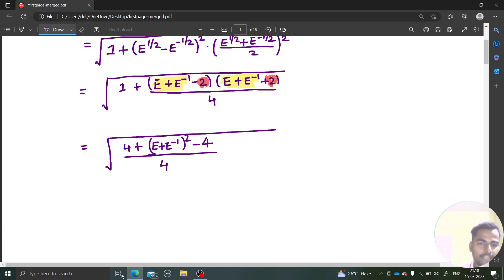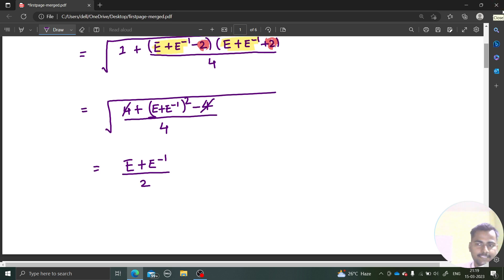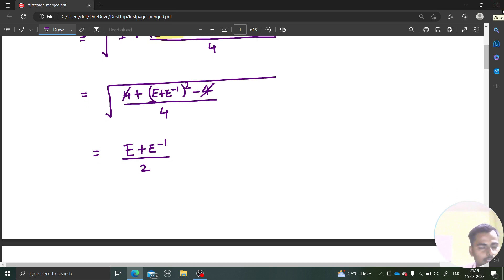Now this 4 can be cancelled out. You are left with e plus e power minus 1 whole square divided by 4. If I take this outside the root, what I am doing is I am adding and subtracting 2 so that I can make some perfect square out of this.